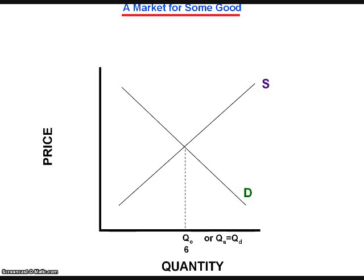Let us assume for the sake of illustration that the equilibrium quantity in this hypothetical market is 6. There is only one price point that satisfies the equilibrium condition. We find that price by tracing the point at which the curves intersect back to the vertical axis, giving us the equilibrium price — set by the interaction of supply and demand where quantity supplied equals quantity demanded. Let us assume that this equilibrium price is $8.